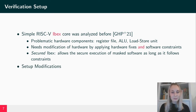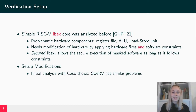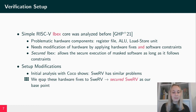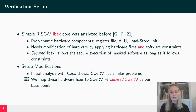Now we consider not the IBEX core but the more complex Swerve core. Our initial analysis with COCO shows that the Swerve core has similar problems — one problematic component is also the register file. We find out that we can simply map the hardware fixes suggested in prior work to the Swerve core to obtain a secured Swerve core, which will be the base point for all our further experiments.